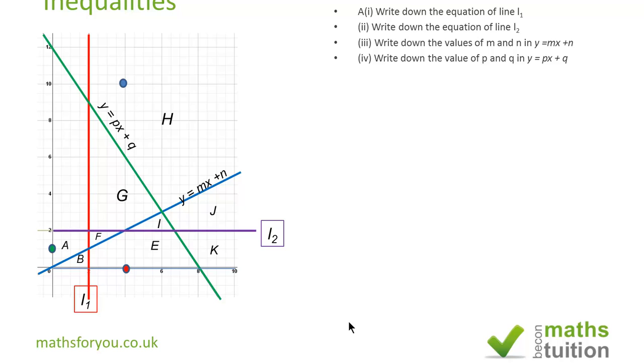Line 1 is perpendicular to the x-axis and crosses the x-axis at the point 2, so line 1 is x equals 2. Similarly, line 2 is y equals 2 because it is perpendicular to the y-axis and crosses it at the point 2.